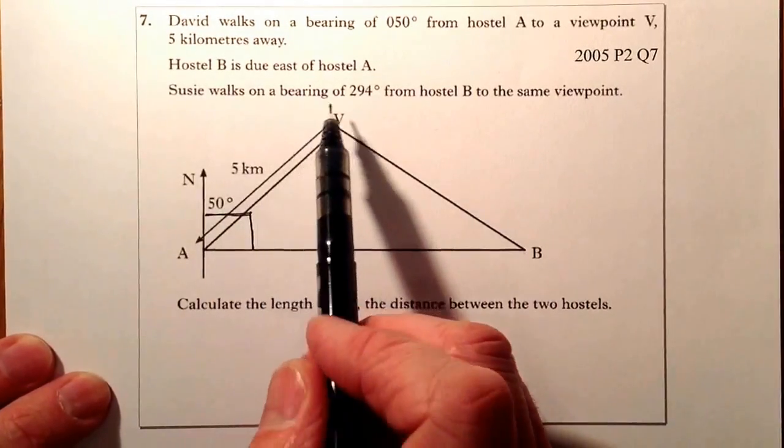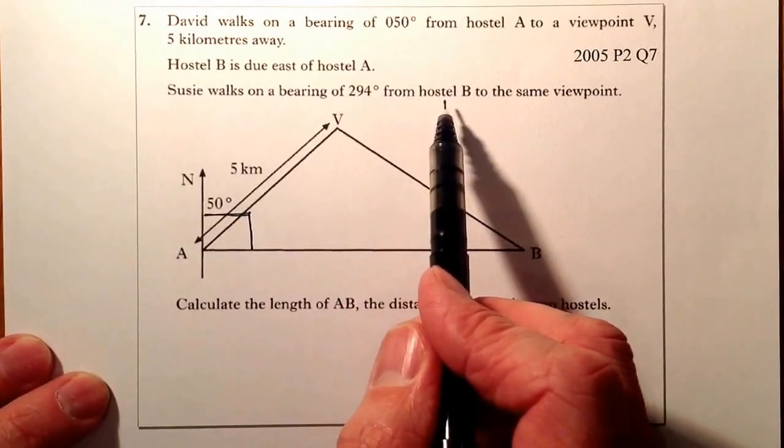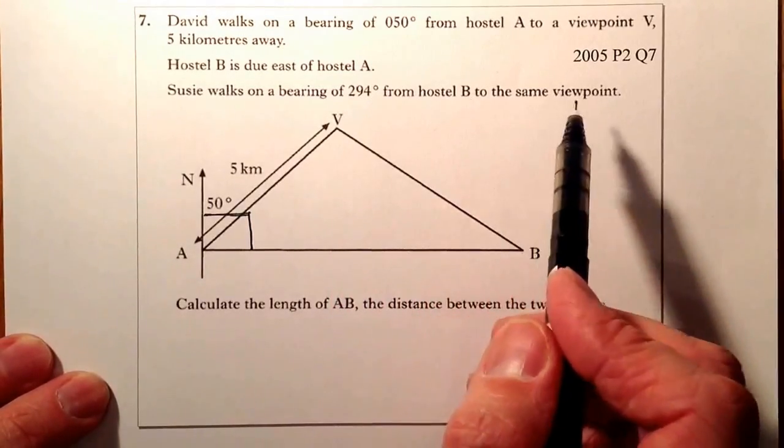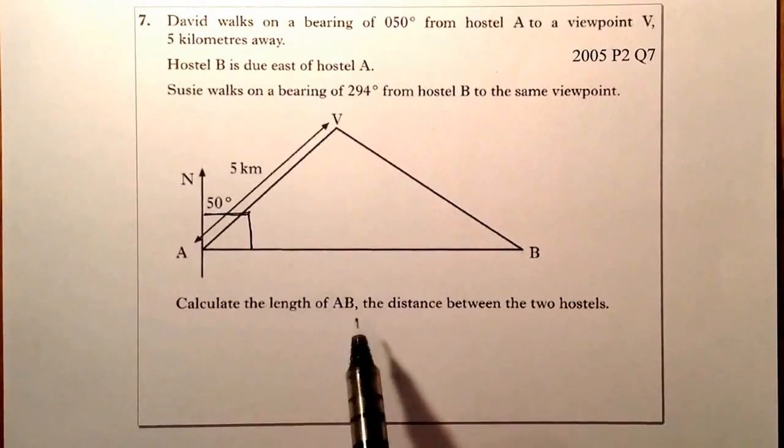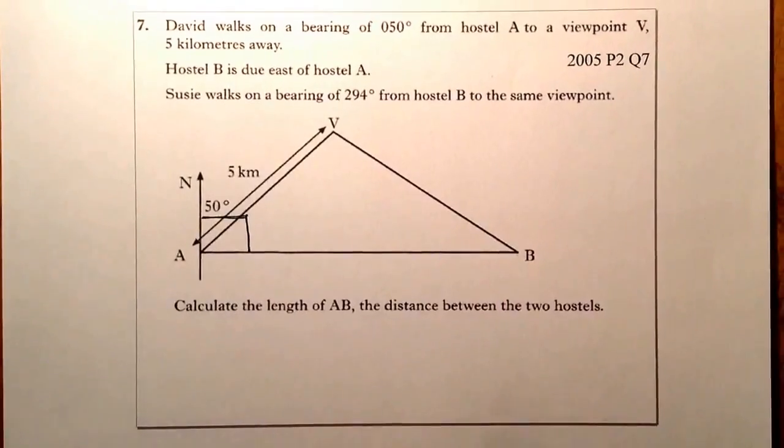Susie walks on a bearing of 294 degrees from Hostel B to the same viewpoint. Right, so let's draw that up. I'm going to calculate the length of AB. That'll be the distance between the two Hostels.